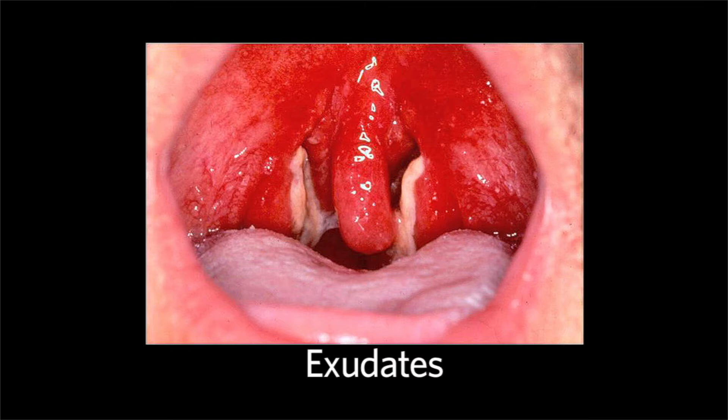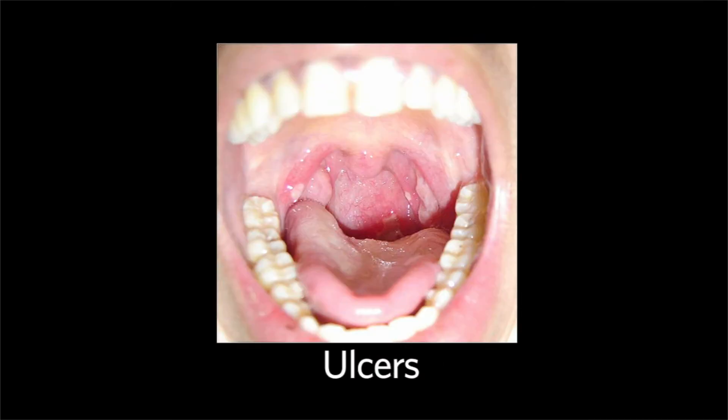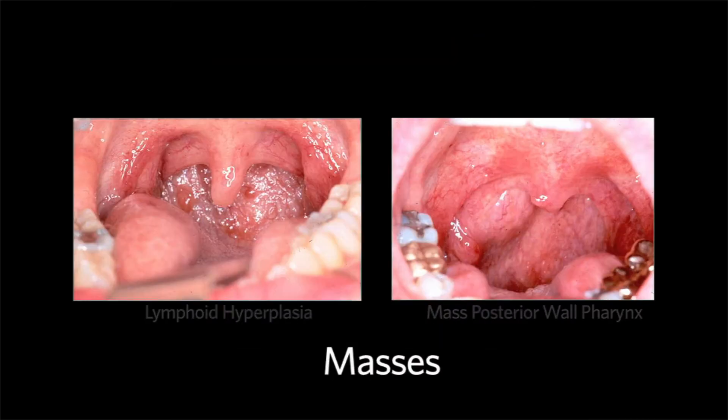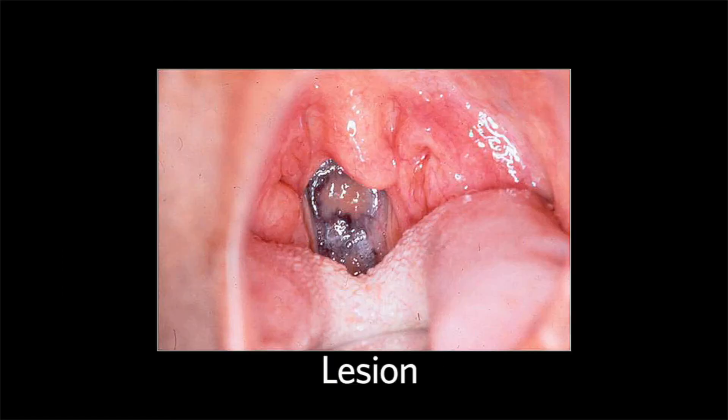Tonsil size is given by a 1 to 4 scale. It is important to pay attention to any tonsillar or oropharyngeal pathology, such as exudates, ulcers, masses, or lesions of any kind.